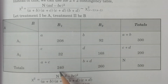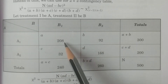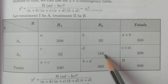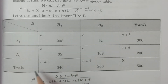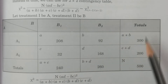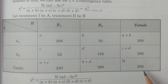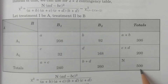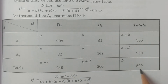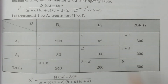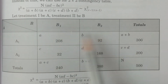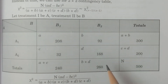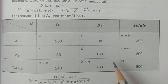Adding column-wise: a+c equals 208+32=240, and b+d equals 92+168=260. Adding row-wise you get the grand total N=500, which equals 300+200 or 240+260. Capital N is the sum of all values: a+b+c+d equals 500.